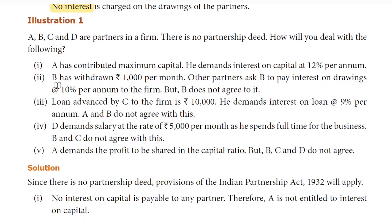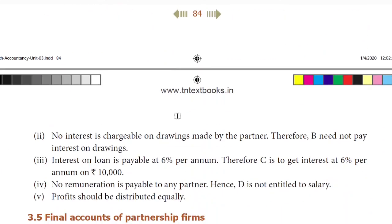Second subdivision. B has withdrawn Rs. 1,000 per month. Other partners ask B to pay interest on drawings at 10% per annum to the firm, but B does not agree. As per the Act, no interest is chargeable on drawings made by the partner. Therefore, B need not pay interest on drawings.